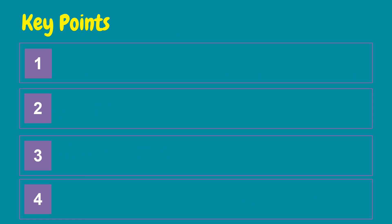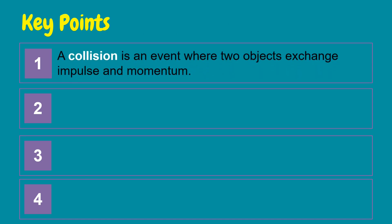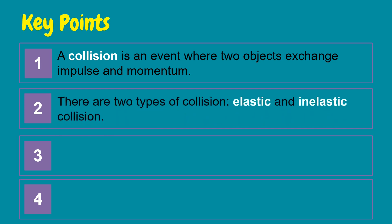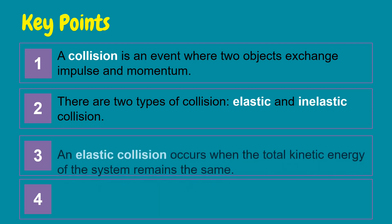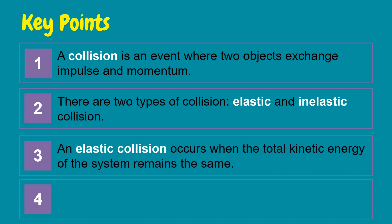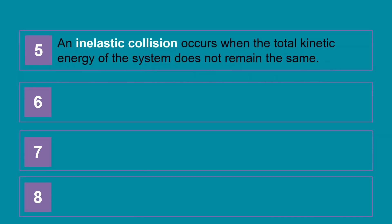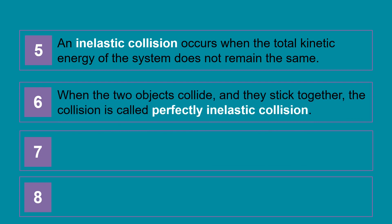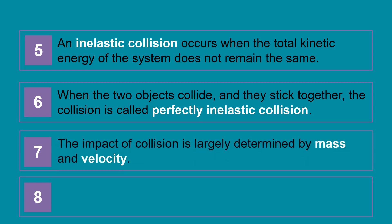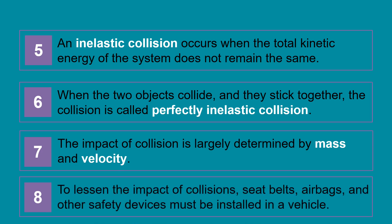Let's recall some key concepts about collisions. A collision is an event where two objects exchange impulse and momentum. There are two types: elastic and inelastic collision. An elastic collision occurs when the total kinetic energy of the system remains the same; when two objects completely bounce off, it is called a perfectly elastic collision. An inelastic collision occurs when the total kinetic energy does not remain the same; when two objects collide and stick together, it is called a perfectly inelastic collision. The impact of collision is largely determined by mass and velocity. To lessen the impact of collisions, seatbelts, airbags, and other safety devices must be installed in a vehicle.